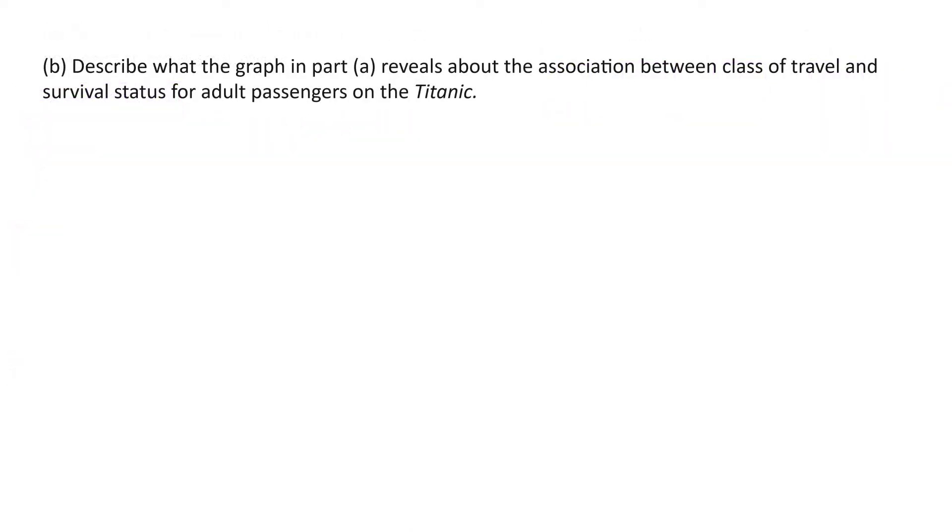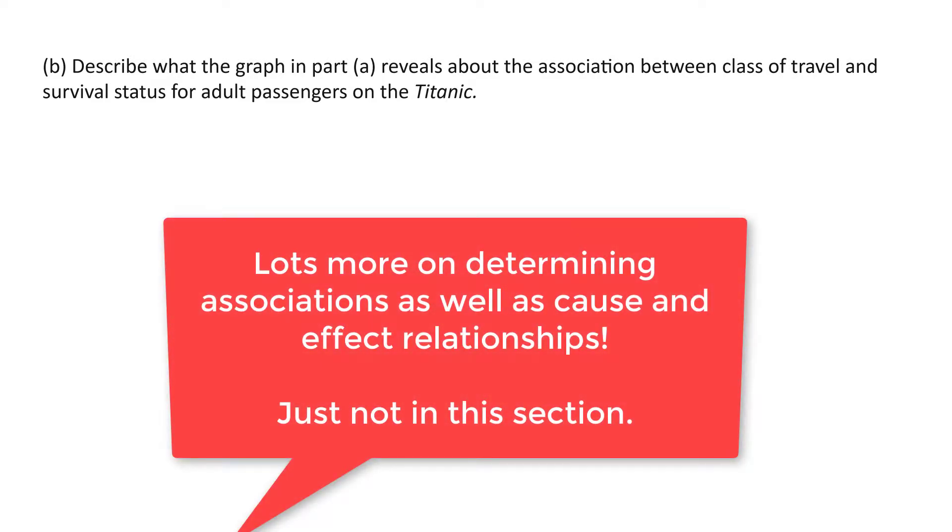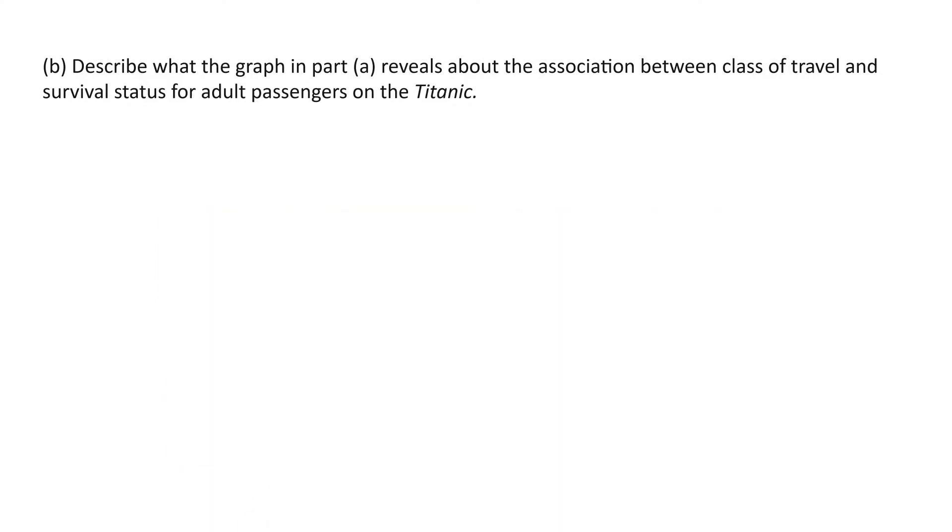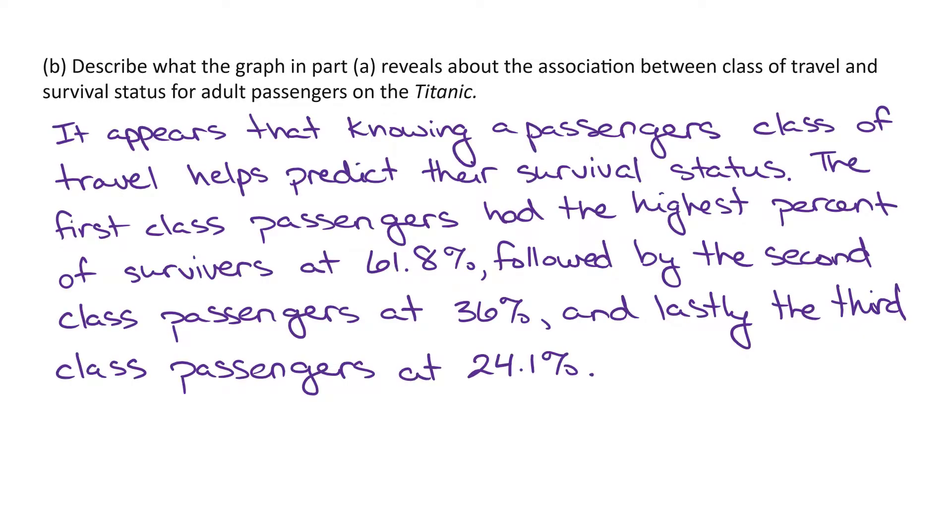Part B is asking us to describe what the graph in Part A reveals about the association between class of travel and survival status for adult passengers of the Titanic. As I mentioned before, we're going to learn more about describing associations. So right now, you're really just looking at your graph and trying to say, well, it looks like this may be associated with this. So one variable is associated with the other. We're going to be much more precise about this in the future, looking at how the data was collected and some other features. But for right now, you're just going to look at the graph and see what does it look like is going on. So it appears that knowing a passenger's class of travel helps predict their survival status. The first class passengers had the highest percent of survivors at 61.8%, followed by the second class passengers at 36%, and lastly, the third class passengers at 21.4%.